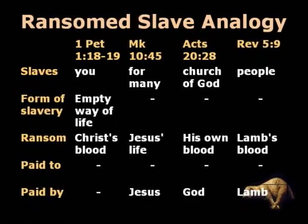We are tracing the ransomed slave analogy in this lesson. The New Testament constantly intermixes this theme with that of sacrifice and atonement for sin. Let's examine the ransomed slave analogy a bit further and look at each element in the analogy in the following table. You'll notice the slaves correspond to: you, for many, the Church of God, people. The form of slavery in one of the passages is an empty way of life. The ransom price is Christ's blood, Jesus' life, his own blood, the Lamb's blood. And the one who pays the ransom, where stated, would be Jesus, God, or the Lamb. But notice the line for the one to whom the ransom is paid — it's not given. God is clearly the owner now, but to whom is the ransom paid? We aren't told, because the New Testament writers don't carry the analogy that far.